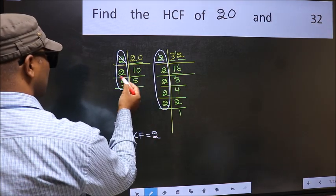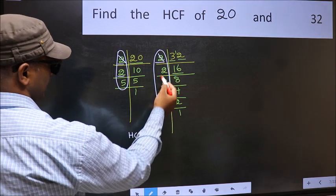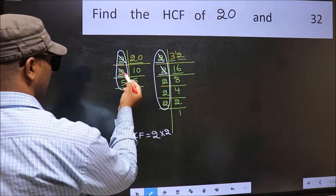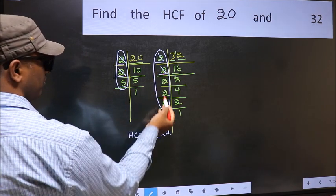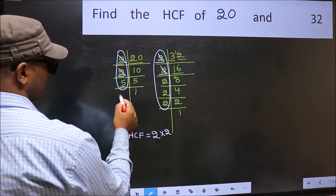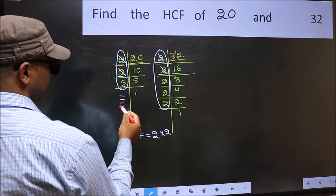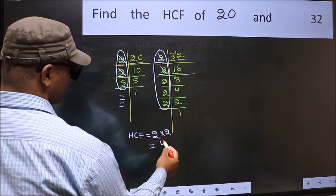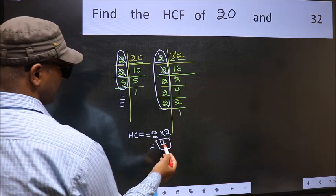Next number 5. Do we have 5 here? No. No more numbers have been left out. So our HCF is 2 times 2, 4 is our HCF.